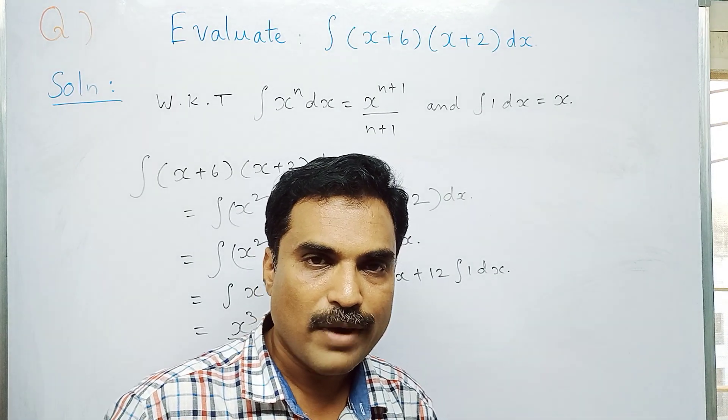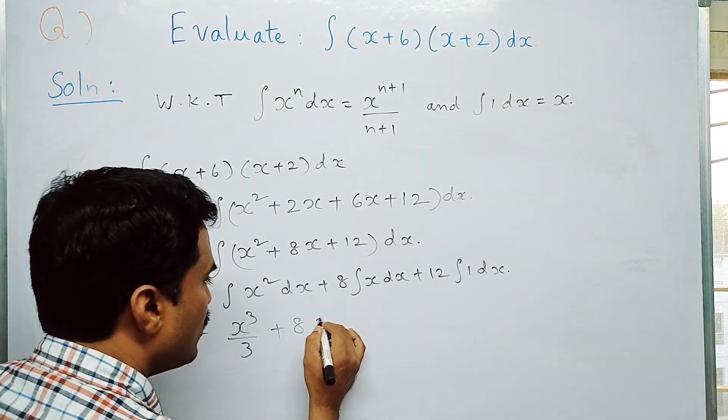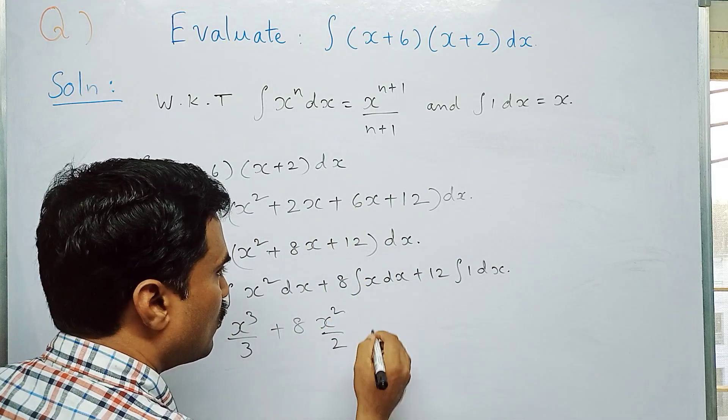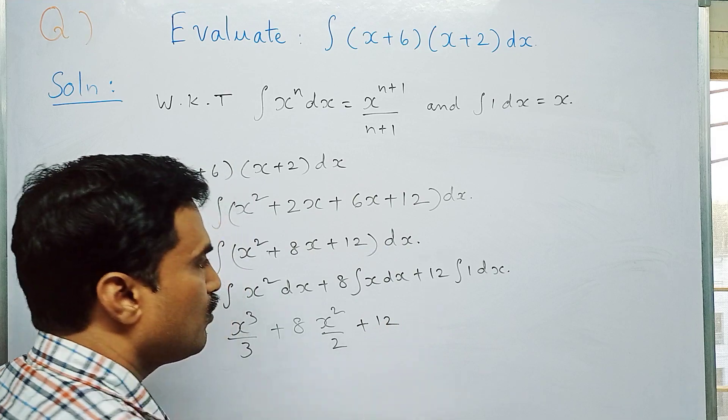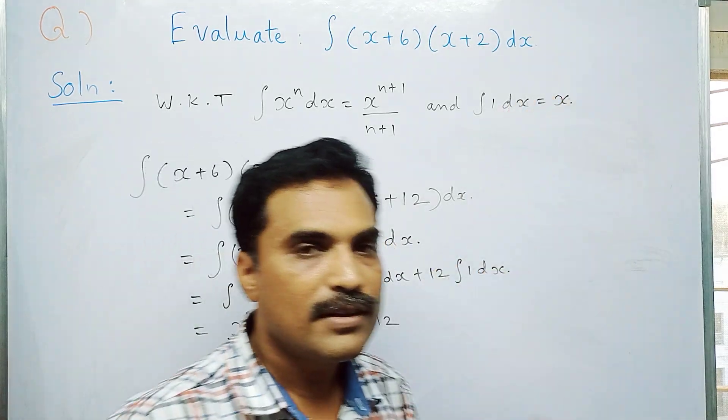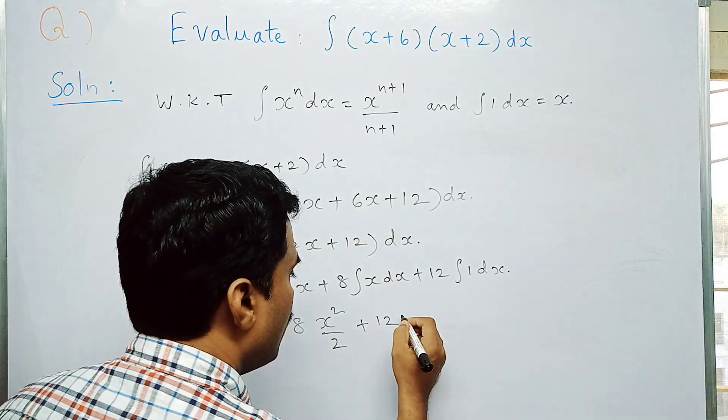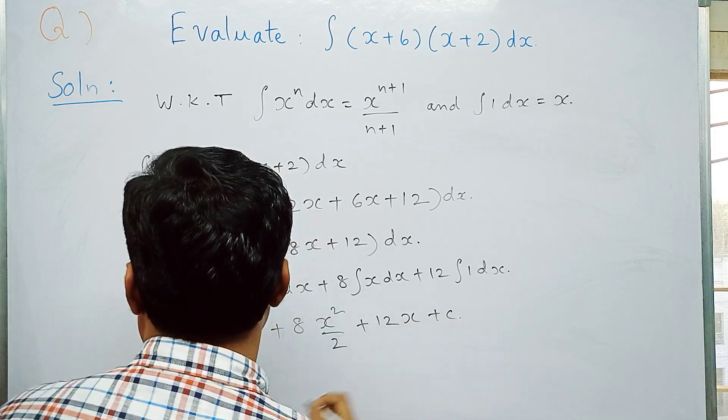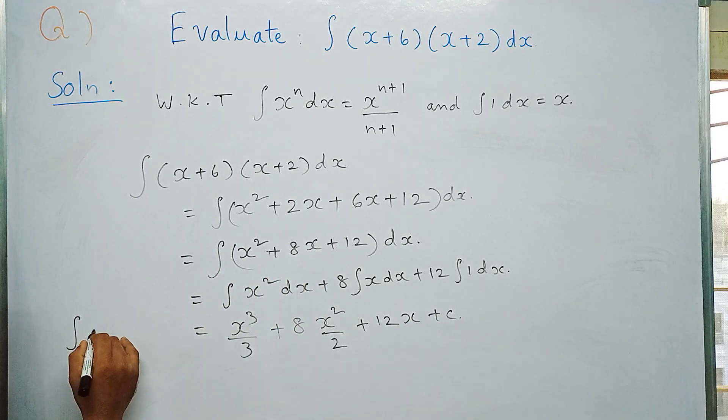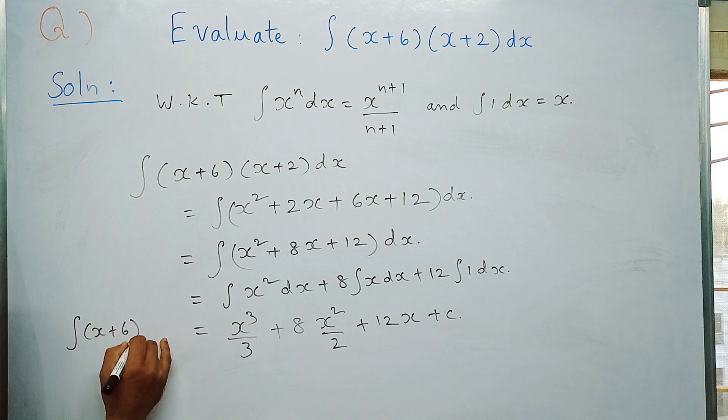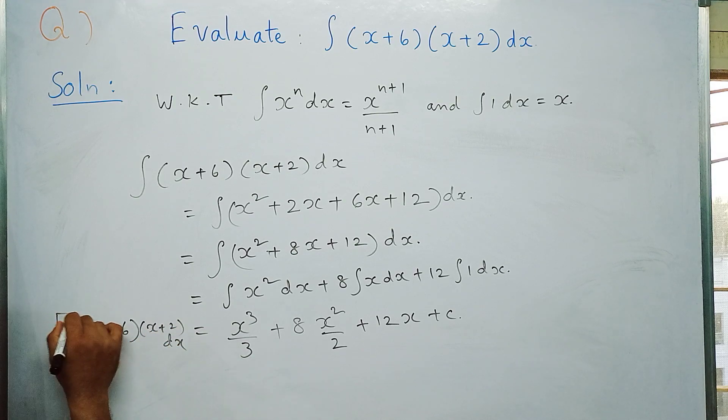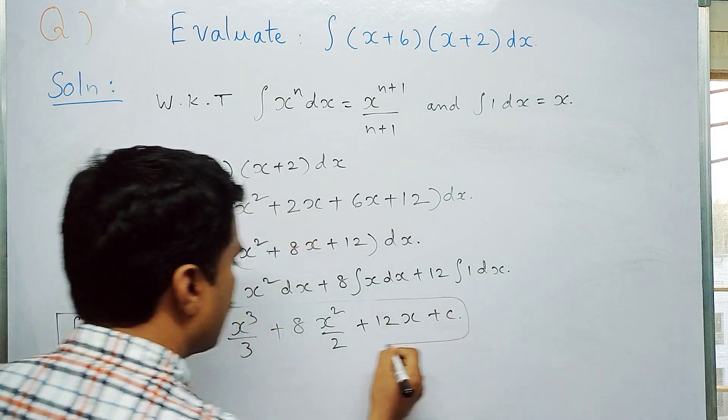Plus 12 into integral 1 dx, which is x. So 12 into x plus c. The left hand side is integral (x+6)(x+2)dx, so this is the final solution.